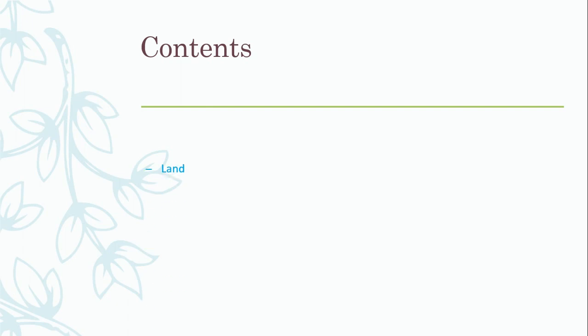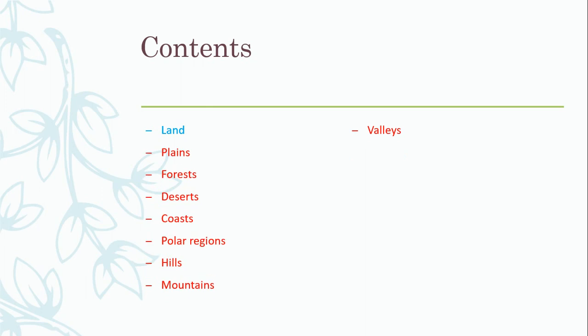First, let's look at the contents. They are land, and in land we have different categories like plains, forest, desert, coast, polar region, hills, mountains, valleys, and water. So, let's begin the chapter.